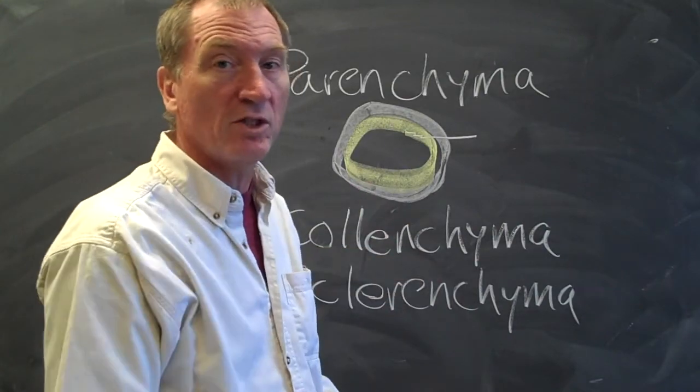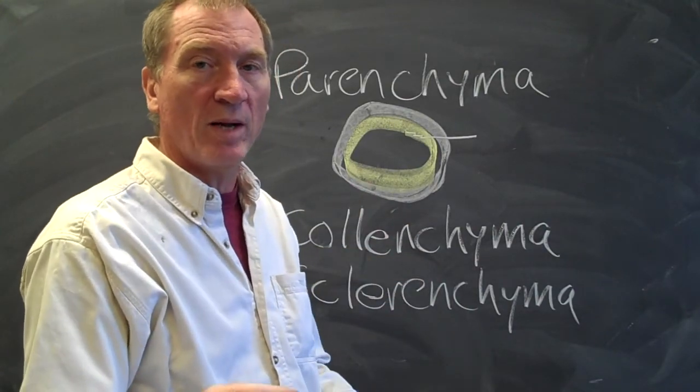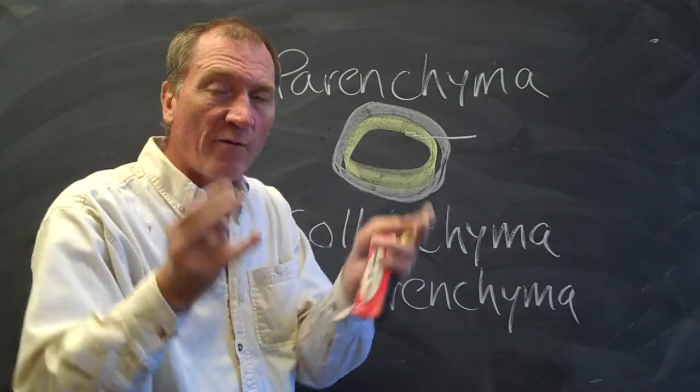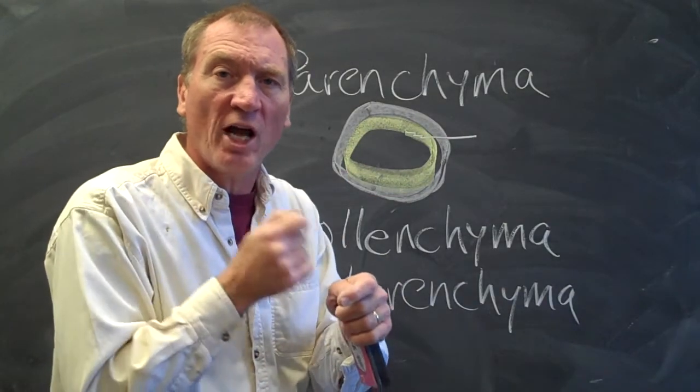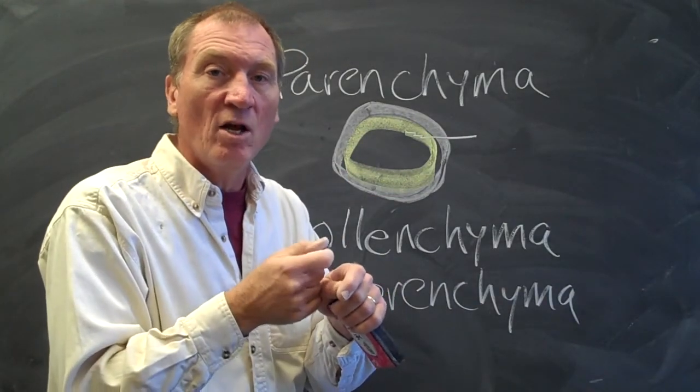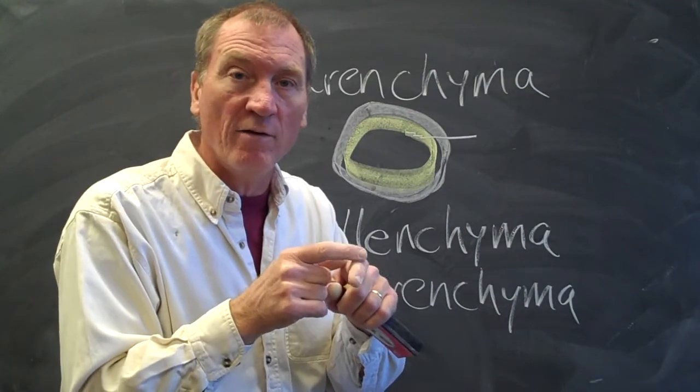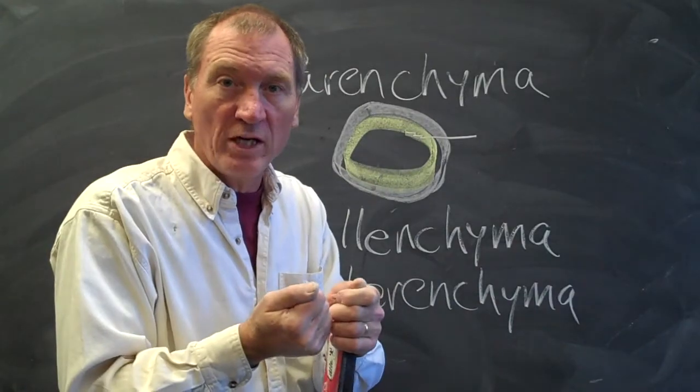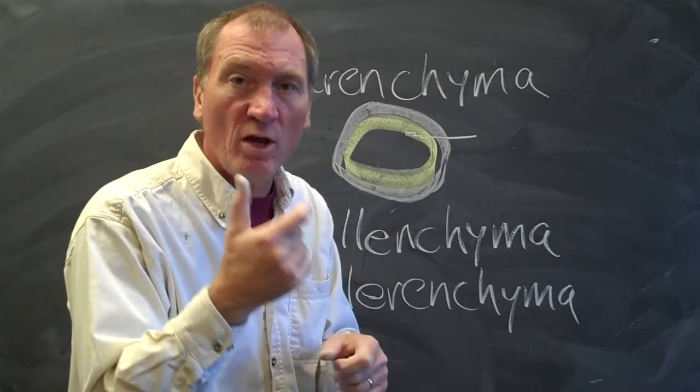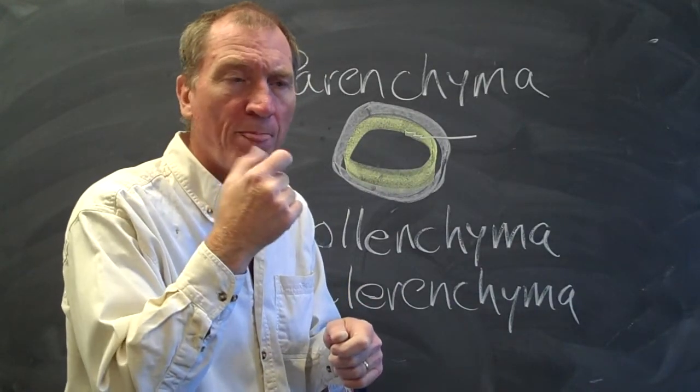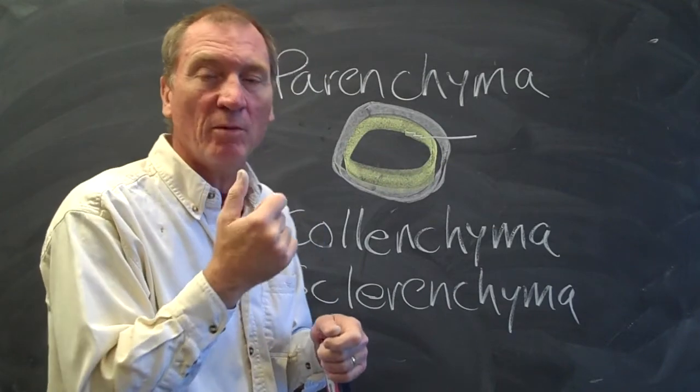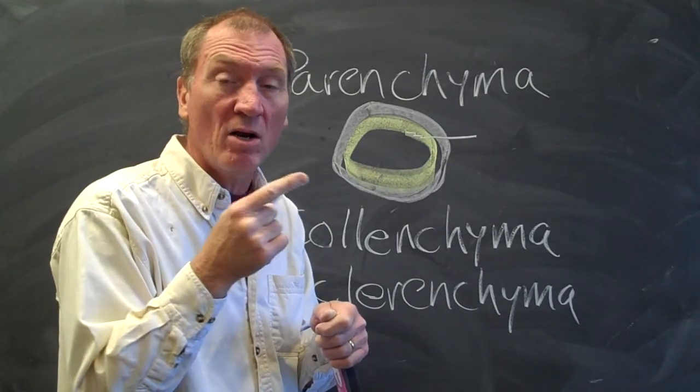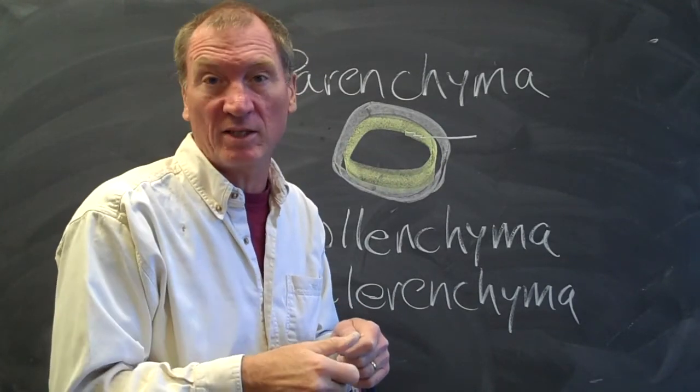The other important use of sclerenchyma in a plant cell is to cover over things for protection. So the hard shells of a nut, for instance, or the pits inside of a peach, those hard bits are sclerenchyma cells. And if you've eaten a pear, you know there are little bits of grit that you can feel between your teeth when you're eating a pear. That's sclerenchyma cells also.